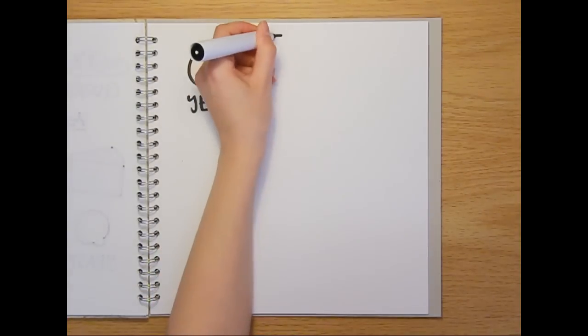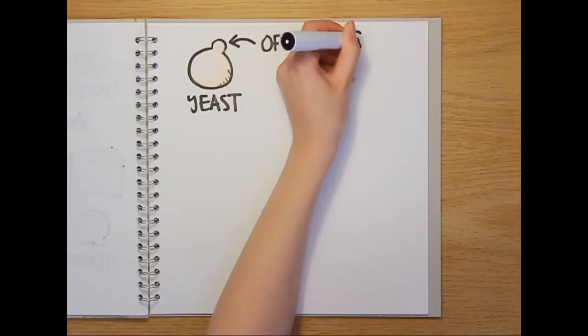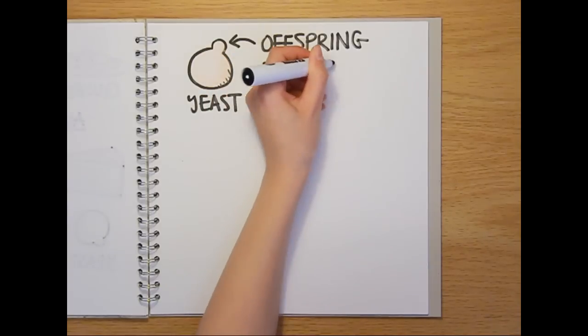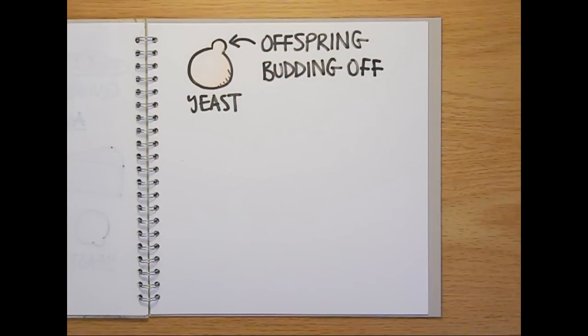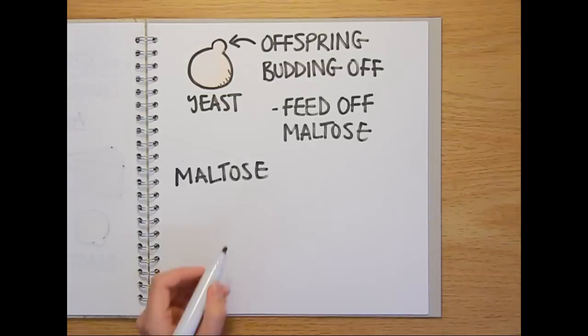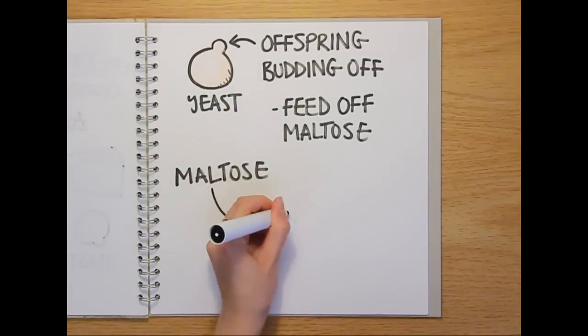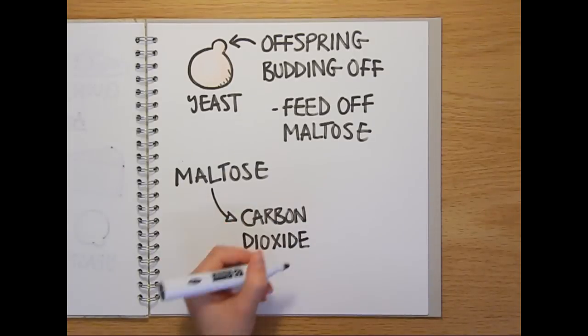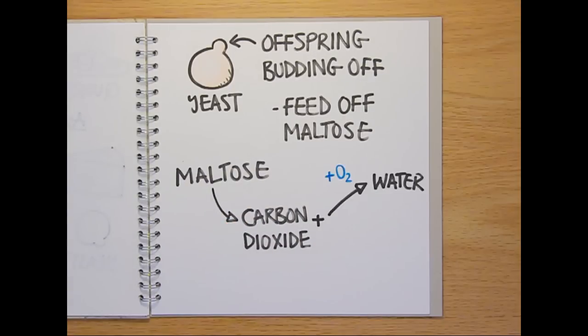Yeasts are single-celled fungi that reproduce asexually by budding. The next generations simply bud off the parent, rather than releasing spores like the toadstools we met earlier. When the yeast feeds off maltose sugar in flour, malt or mashed fruit, it produces carbon dioxide, plus water if there's plenty of oxygen, and alcohol if there's no oxygen.